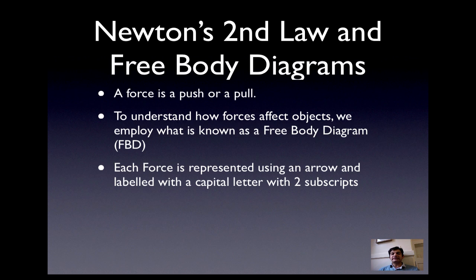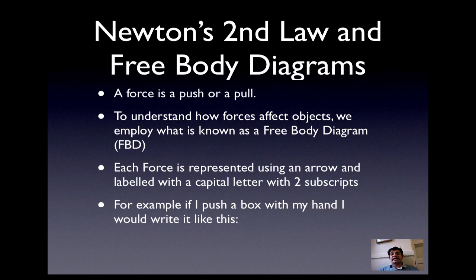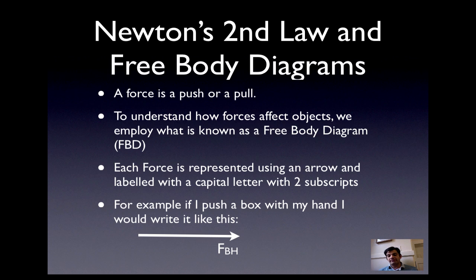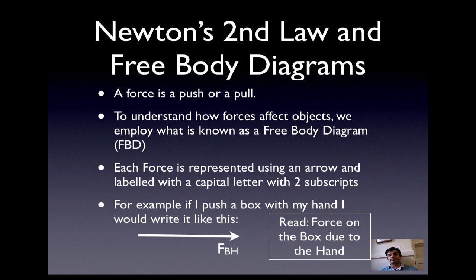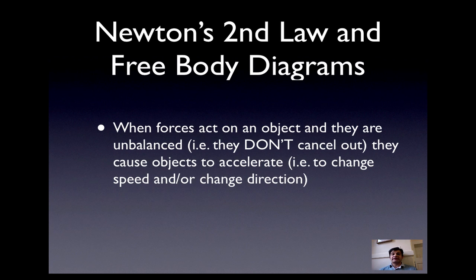We're going to label each arrow with a capital letter and two subscripts. For example, suppose I'm pushing a box with my hands. I would draw an arrow representing the push on the box and label it with a capital F for force, B for the box, and H for my hands. The first subscript — B — is the thing that experiences the force; the second subscript — H — is the thing that produces the force, the hand. So we call it 'force on the box due to the hand.'